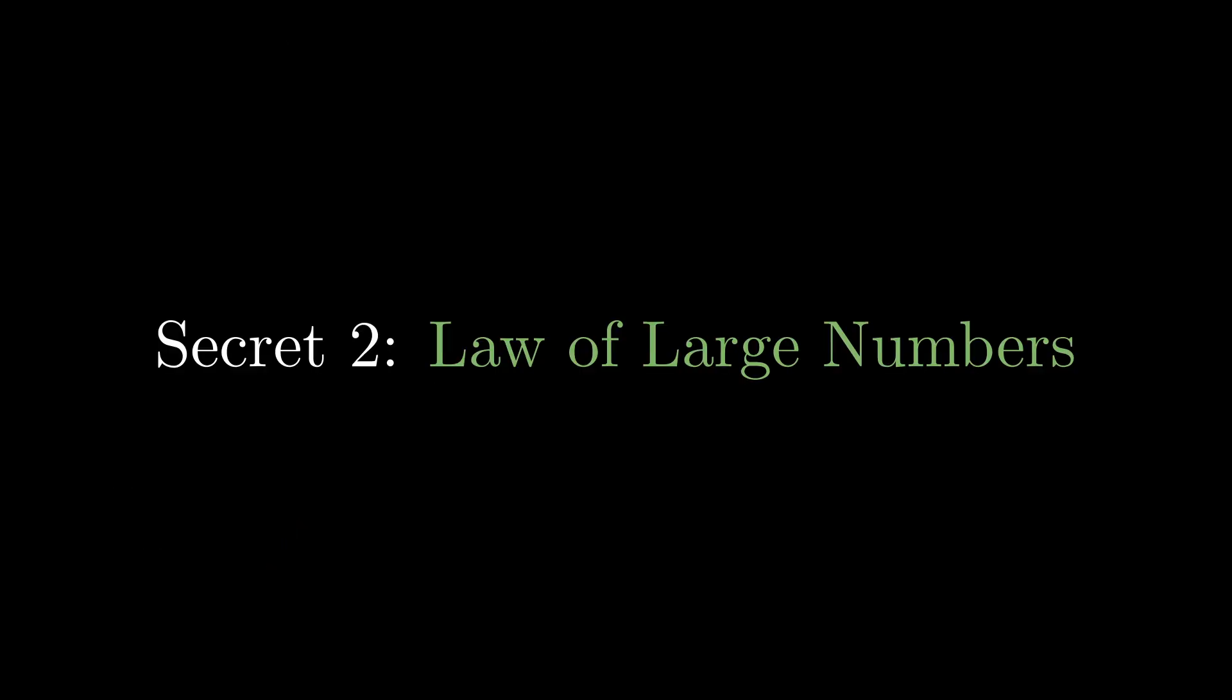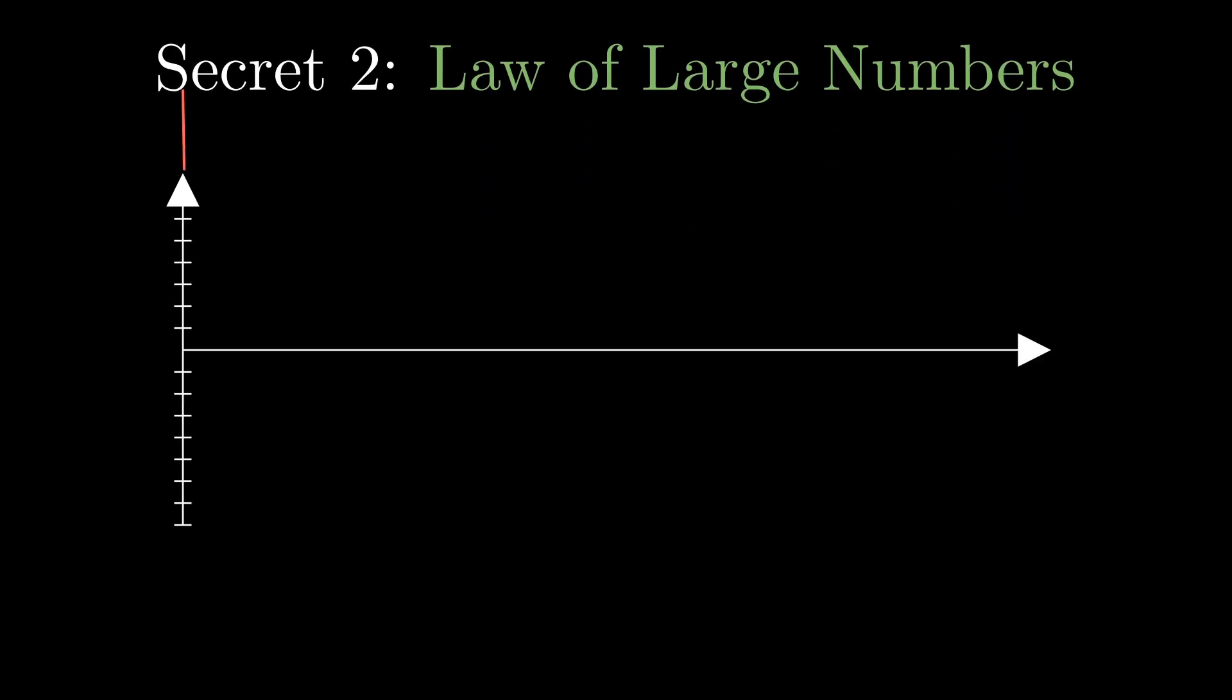The second secret is the law of large numbers. We didn't make any money with just 10 trades because the results hadn't yet converged to the EV. On this chart, the x-axis shows the number of trades and the y-axis shows the sampled EV. As we make more trades, the results get closer to the EV. Once it converges, it hovers around it. That's why making lots of trades matters.